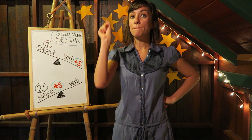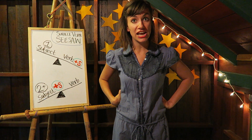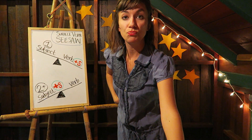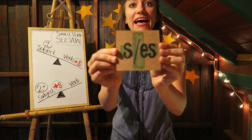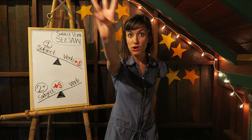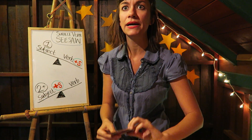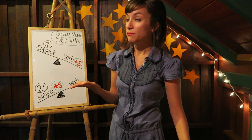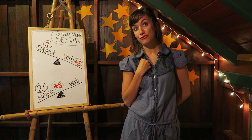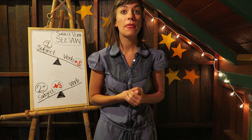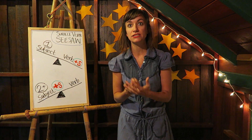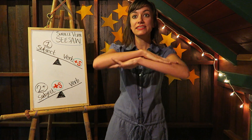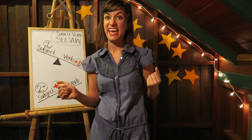Let's review. Number one: a subject is always a noun. Number two: to pluralize a subject, add an S. Number three: to pluralize a verb, take away the S. Number four: a singular subject needs a singular verb. Number five: a plural subject needs a plural verb. Remember the seesaw — only one gets the S.